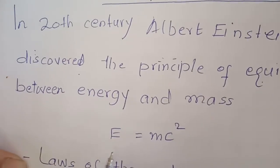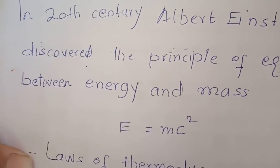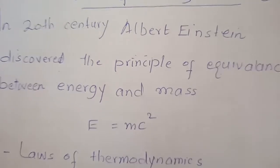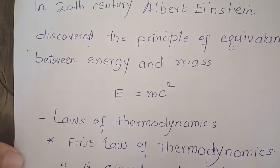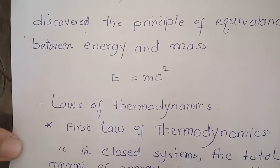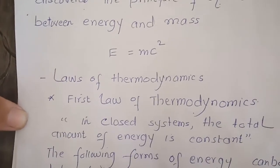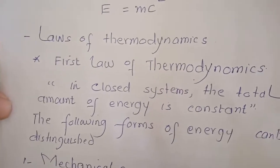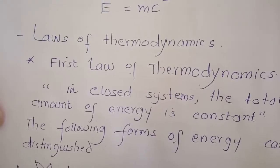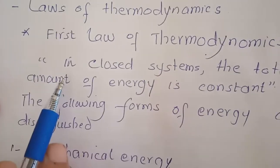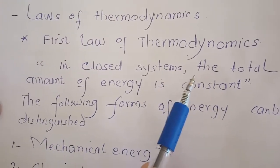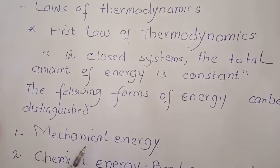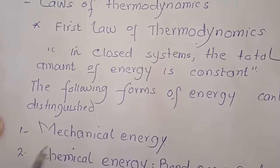According to Einstein, E equals mc squared. This reflects the equation between energy and mass. Laws of thermodynamics are very important in the field of physics, so let's discuss these. There are two laws of thermodynamics. The first law of thermodynamics states that in closed systems, the total amount of energy is constant. This law assumes the total amount of energy constant.